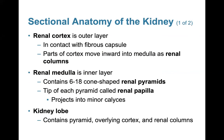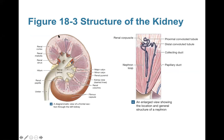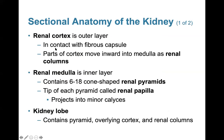The renal cortex is the outer layer, in contact with the fibrous capsule. Parts of the cortex move inward toward the medulla, referred to as the renal columns. The renal medulla is the inner layer and contains six to eighteen cone-shaped renal pyramids. The tip of each renal pyramid is called the renal papilla, which projects into the minor calyxes. A kidney lobe contains a renal pyramid, overlying cortex, and the renal columns.